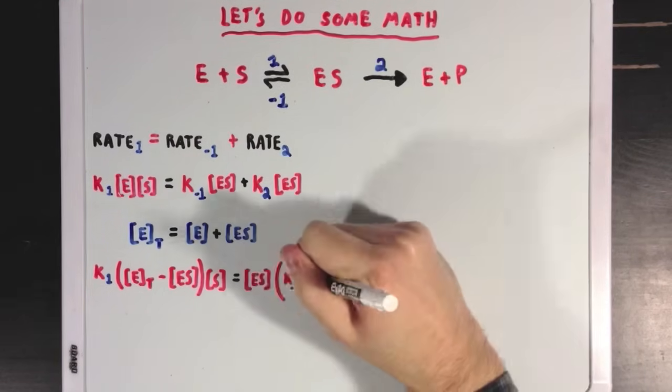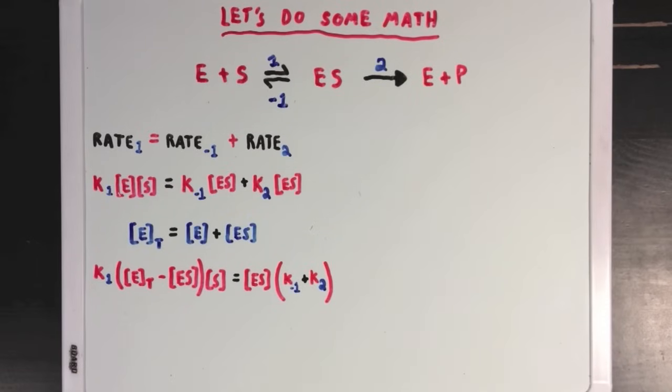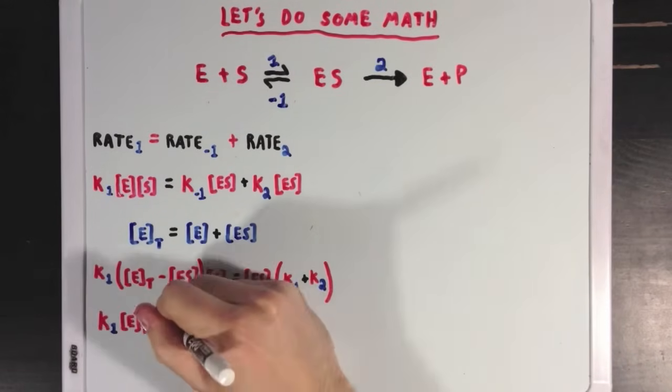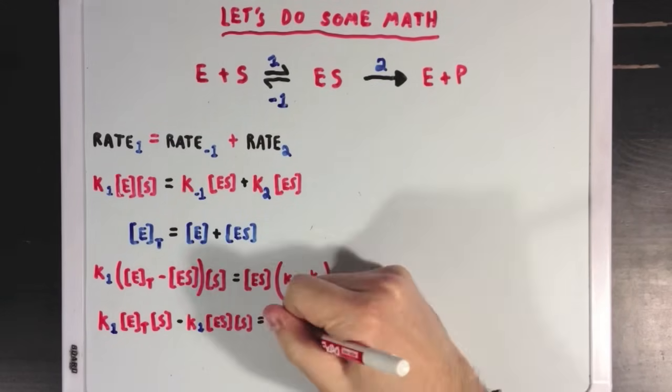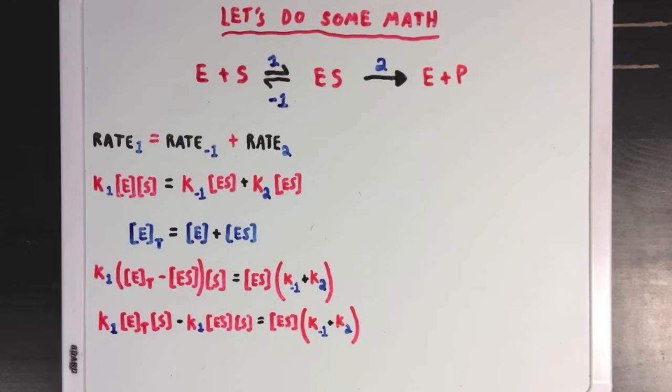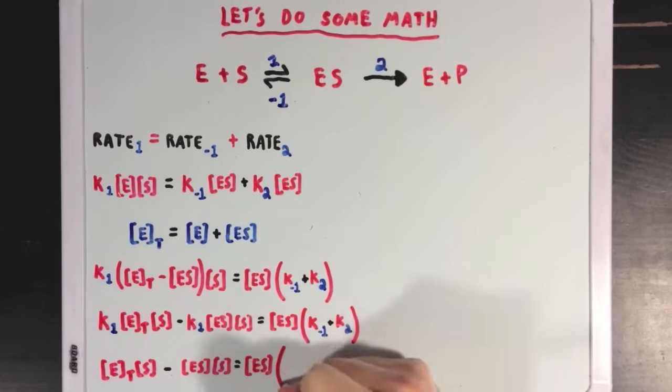On the right side of the equation, I've just factored out the common term ES. Next, I'm just going to expand the left side of the equation, so take a moment to look at that. And now what I'm going to do is divide both sides of the equation by K1. So, K1 will disappear on our left side, and on our right side, I've put K1 in with all the other rate constants.